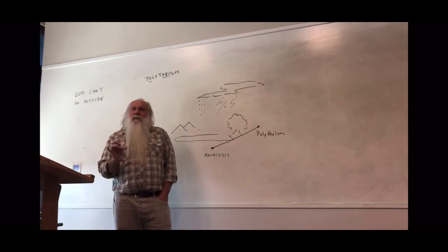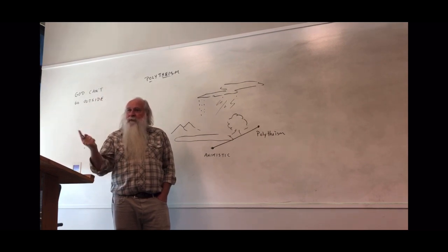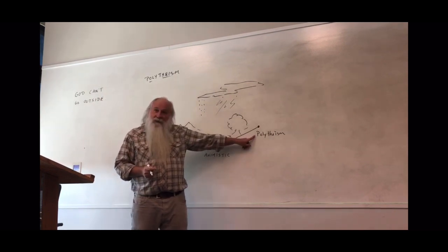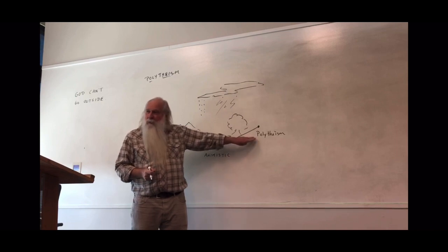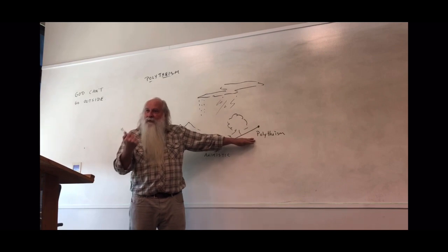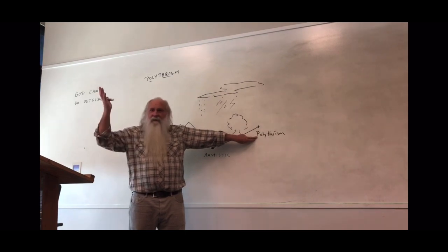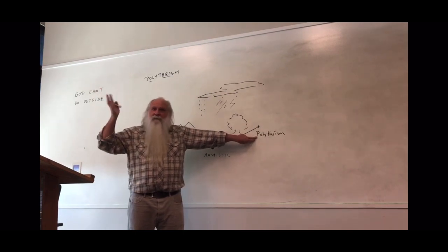But then out of polytheism, we get those three modern worldviews, both naturalism and materialism. Remember, the Greeks, those early monistic materialists, came out of a polytheistic culture. Weird. Theism, monotheism, Abraham, came out of a polytheistic culture. They had gods and goddesses for everything, probably human sacrifice, the whole nine yards.